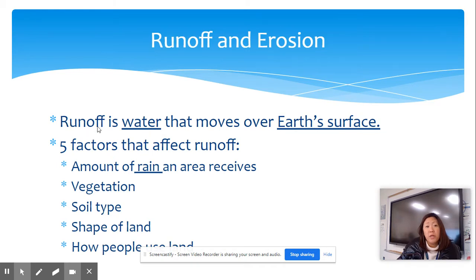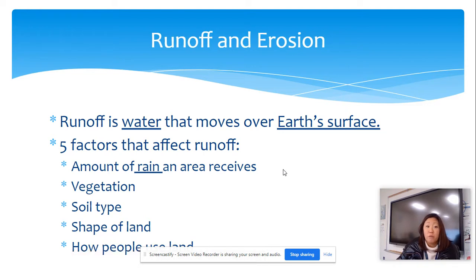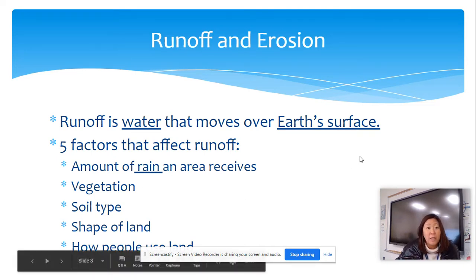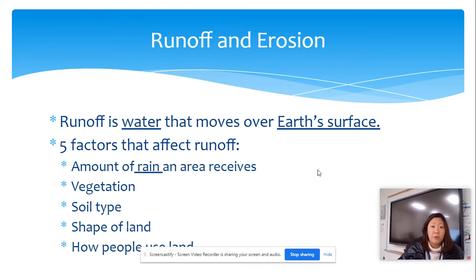For runoff and erosion: runoff is simply any type of water that moves over the earth's surface. There are different factors that may affect the amount of runoff — the amount of rain, so if you have more rain then you're going to have more runoff. Also the type of vegetation, the type of soil — if the soil absorbs more water, then it's going to have less runoff. Also the shape of the land, depending upon how steep it is, and of course how people are using the land.